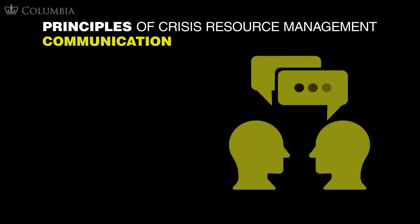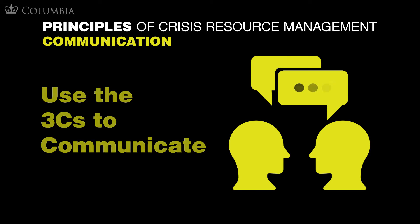So far in this section, we've discussed how specific communication skills can be used to help minimize confusion during a crisis. If we use the three C's of communication — citing names, using clear instructions, and closing the loop — we avoid errors and receive confirmation that needed tasks are getting done.